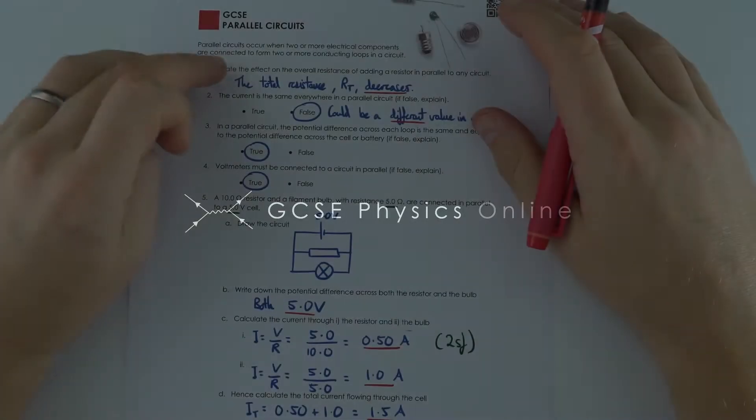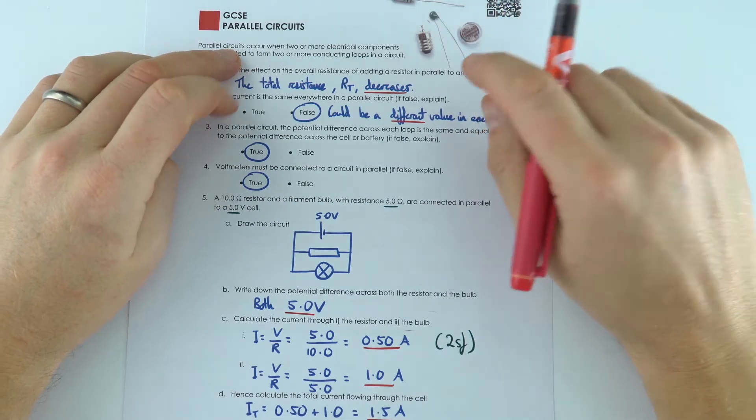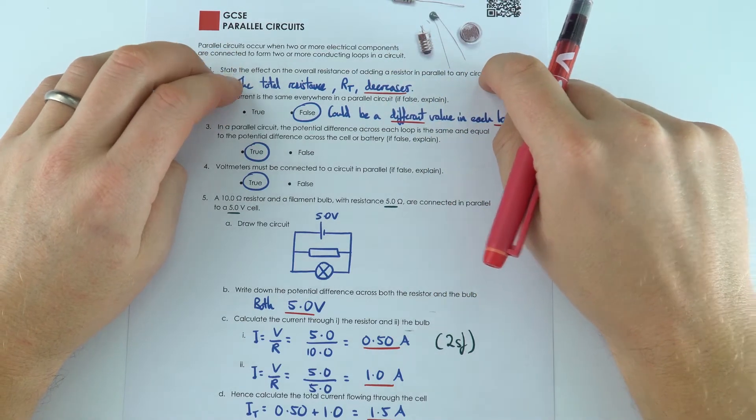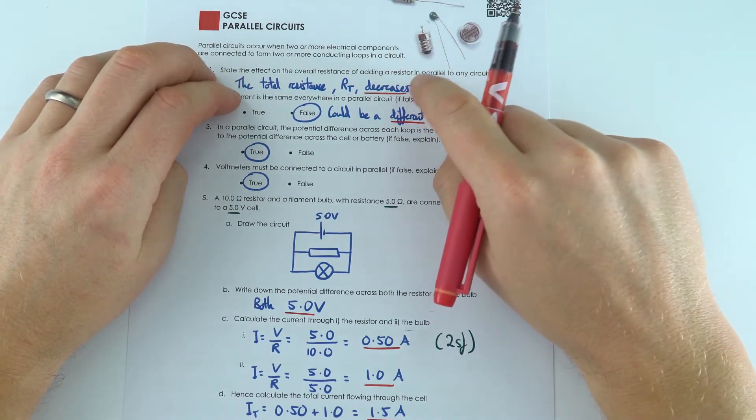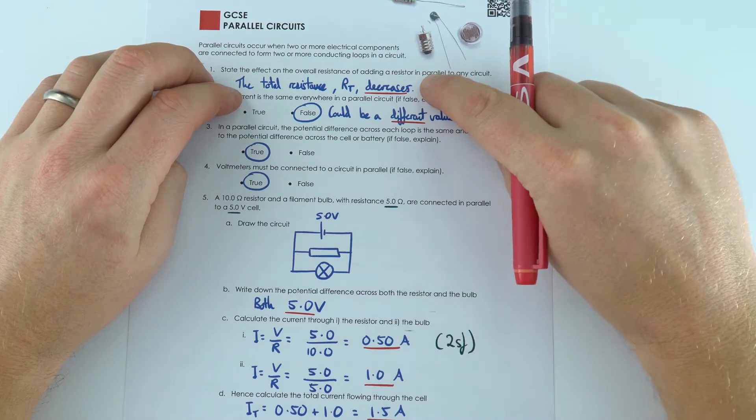So moving on from series circuits, we can now look at parallel circuits where basically as you have more components added in different loops, this actually decreases the total resistance of that circuit.